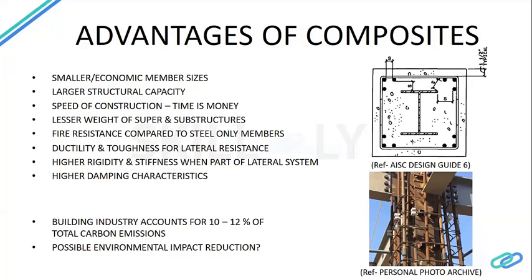Getting back to composites in building applications, the key advantage is maximum utilization of both structural steel and concrete. Member sizes can be much smaller compared to a pure steel or pure concrete member, load-carrying capacity is high, and the speed of construction is very fast. These elements are prefabricated and assembled on site, with concrete quickly poured around them. Building two or three months ahead of schedule compared to a concrete building means you can start renting out sooner — time is money.